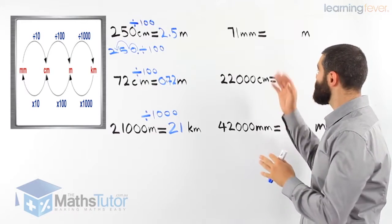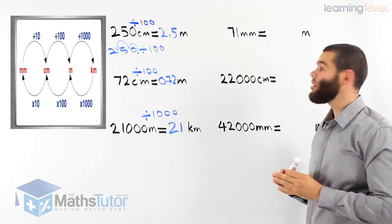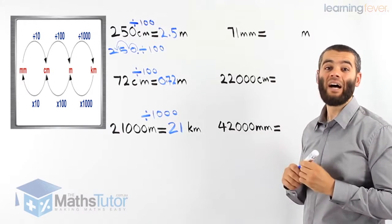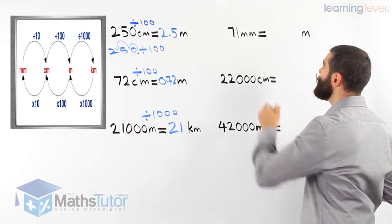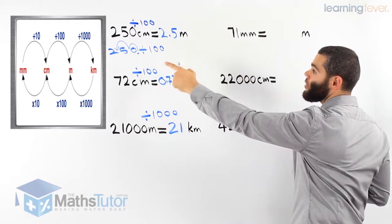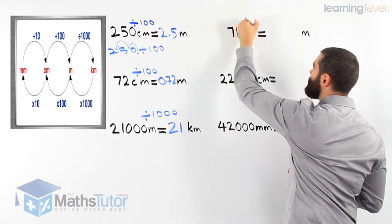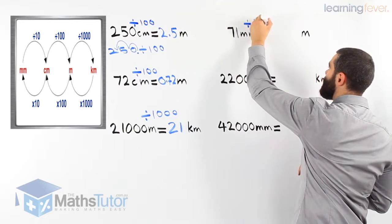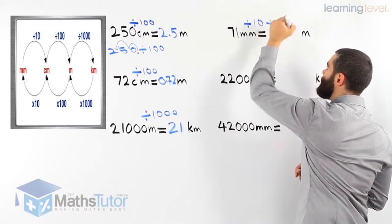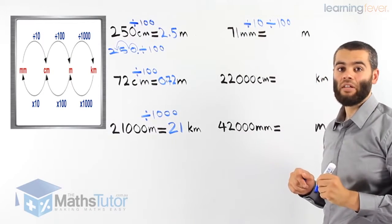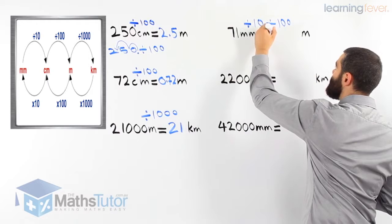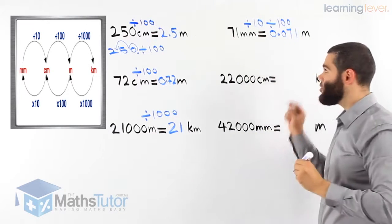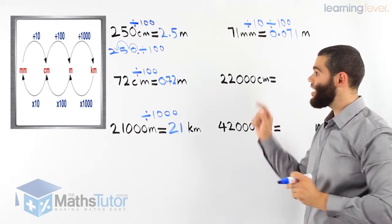The next example: 71 millimetres, we're going to convert it to metres. We're going from millimetres all the way to metres, so we have to go past centimetres. 71 millimetres to centimetres: divide by 10. Then from centimetres to metres: divide by 100. So 71 divided by 10, then divided by 100 gives us 0.071 metres.